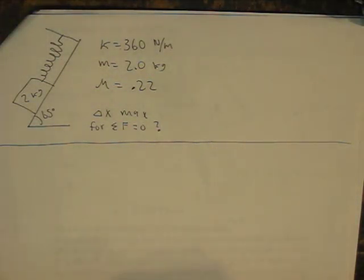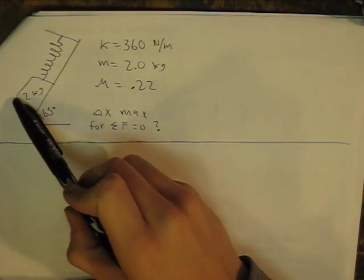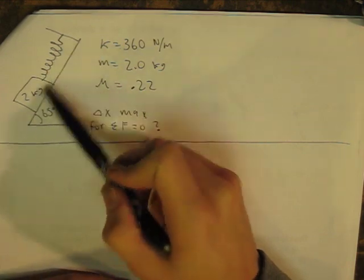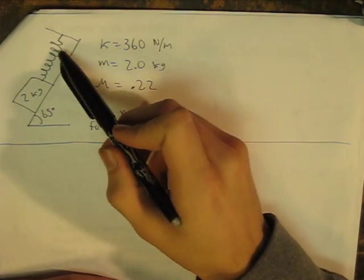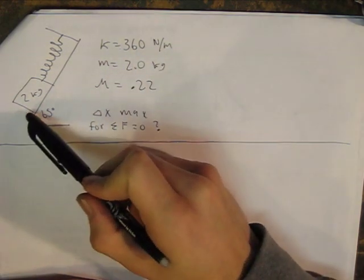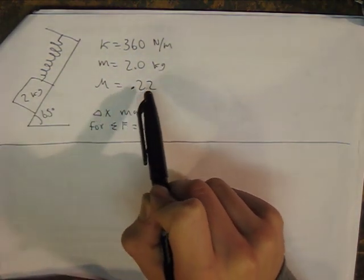So here's a physics problem involving springs and friction and forces. We have this 2 kg weight here on this 65 degree incline surface with a spring with a spring constant of 360 N per meter and a coefficient of friction of 0.22.